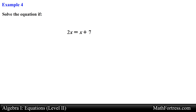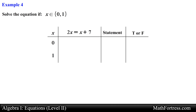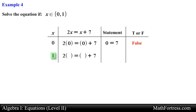Solve the equation 2x equals x plus 7 if x is an element of 0 and 1. Notice that we only have two elements in the domain. Substituting the first element yields 0 is equal to 7, which is false. The last element 1 yields 2 is equal to 8, which is also false. Looking at the results, there isn't a single element in the domain that yielded a true statement, meaning the equation has no solution over the given domain.